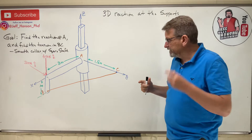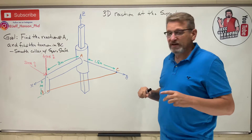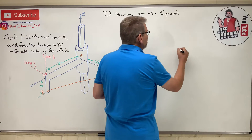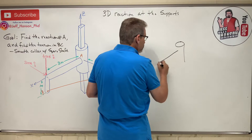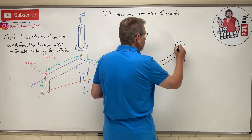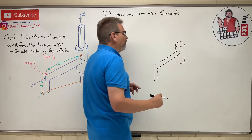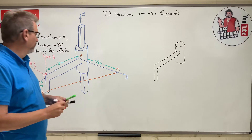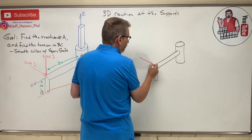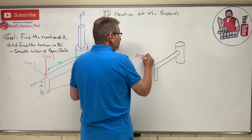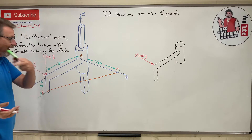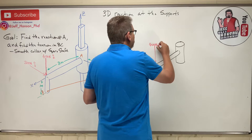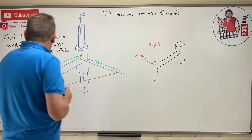The first thing I would do is take that cable, cable BC. The free body diagram consists of just this collar and the shaft — one piece. Here's that collar and here's that shaft. Acting on that shaft there's a force of 200 Newtons in the j-hat direction, meaning straight down the y-axis, and then 400 Newtons in the k-hat direction.